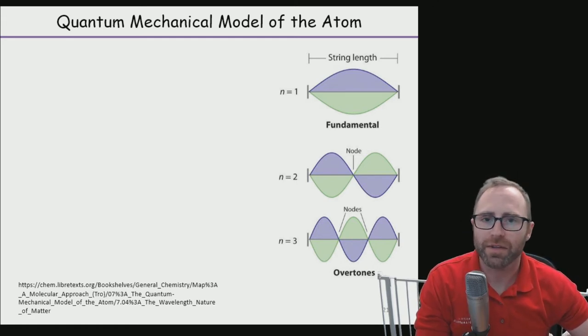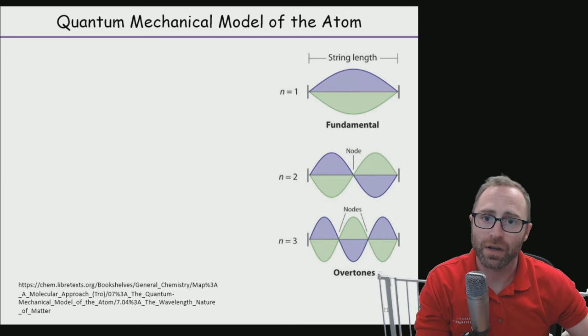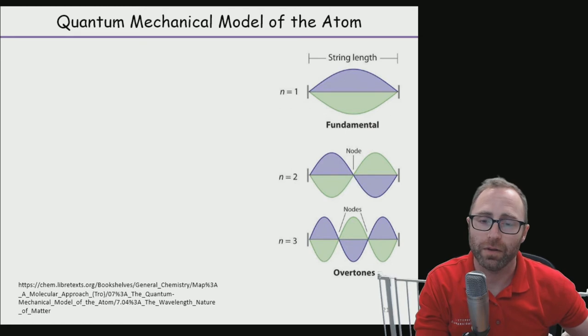We've talked previously that we had the Bohr model of the atom, and that worked very well with one-electron systems like hydrogen. We also noted that there's not a lot of one-electron systems out there besides hydrogen, so we need to have a more advanced model for what's actually happening with electrons and atoms in general.